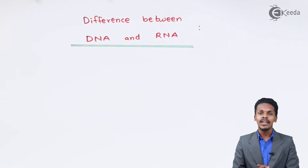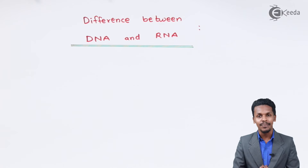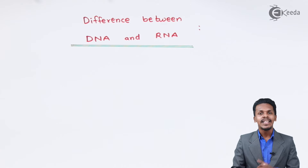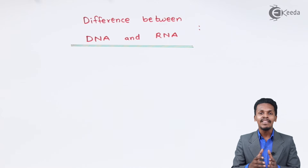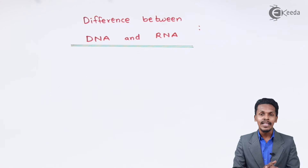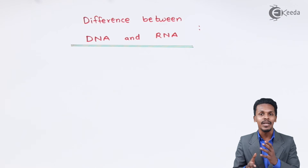For DNA it is a double stranded alpha helix structure, while for RNA it is a single stranded alpha helix structure. Talking about the pyrimidine bases — cytosine and thymine are the two bases present in DNA, while cytosine and uracil are the two pyrimidine bases present in RNA.